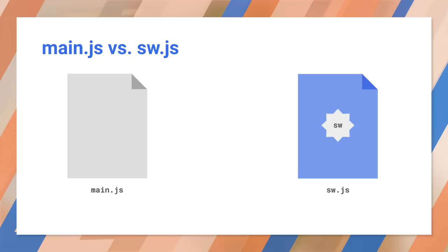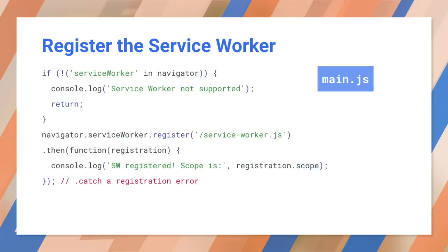Let's set up a service worker. We need two files: our app's file and a service worker control file. Both of these are in JavaScript. In this example, main.js is our web app and sw.js is the service worker. First, you need to register your service worker from your web app. Registration tells the browser where your service worker is located and to start installing it in the background.